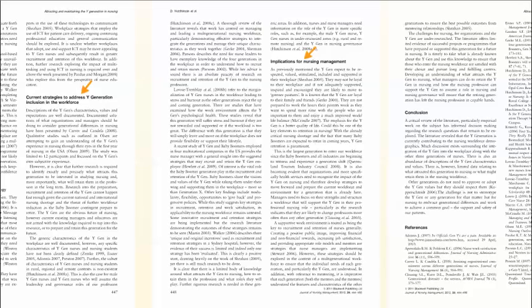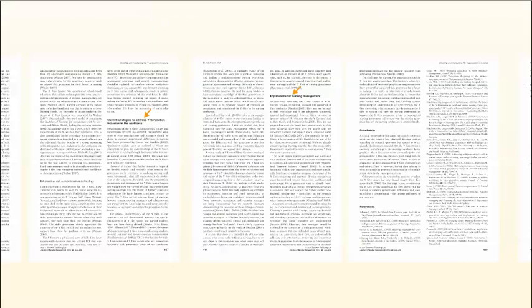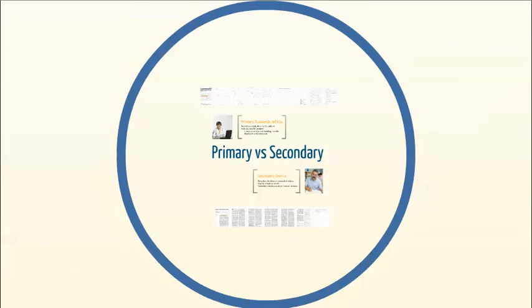Both primary and secondary sources are important in scholarly research. Being able to identify them is a central skill for researchers in any field.